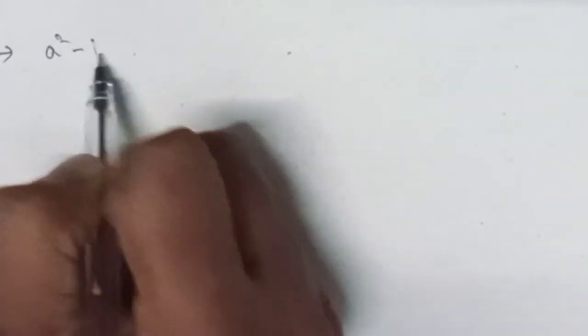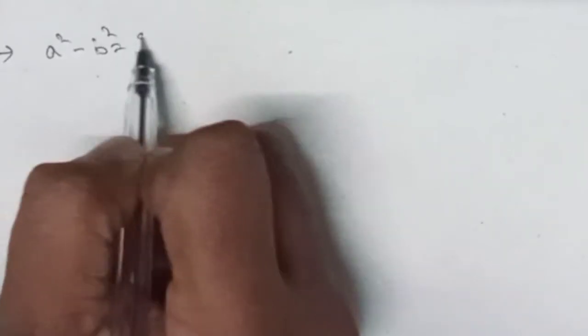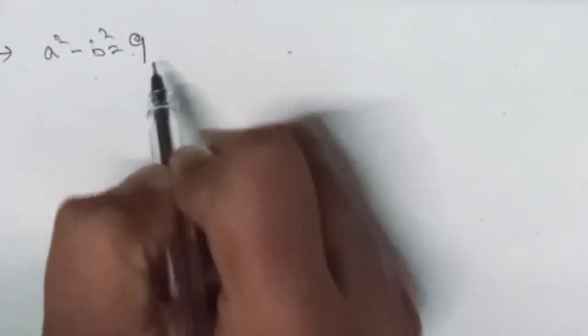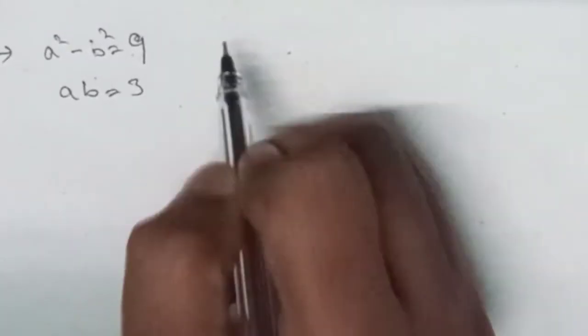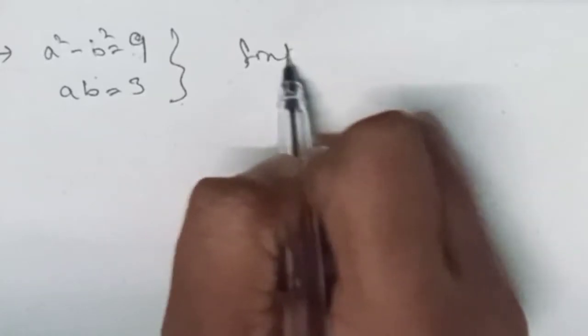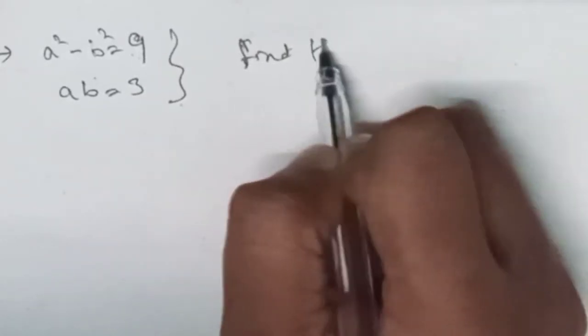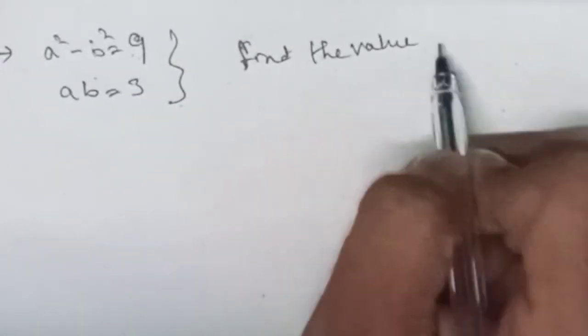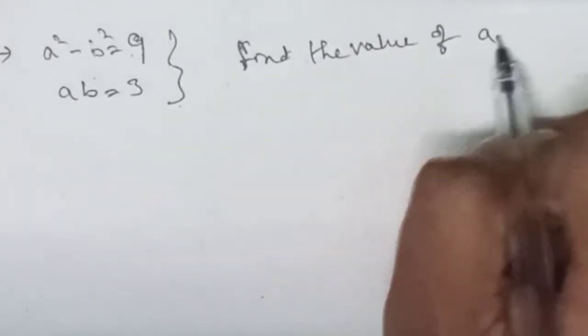Welcome friends, welcome back to the channel. Today we are going to solve one more interesting mathematical question. The question says a squared minus b squared is equal to 9, and ab is equal to 3, and we are asked to find the value of a plus b.